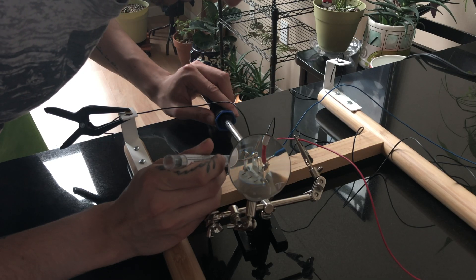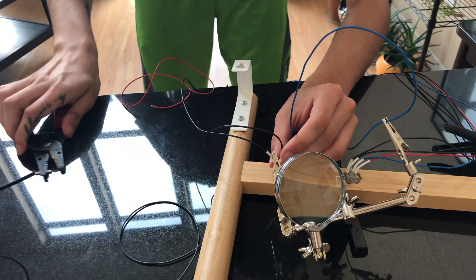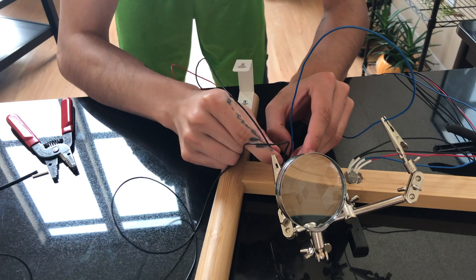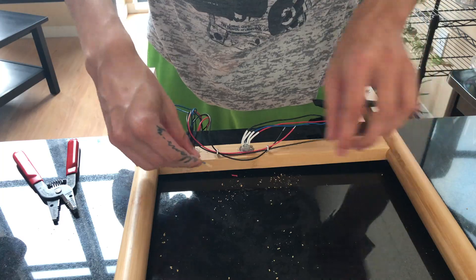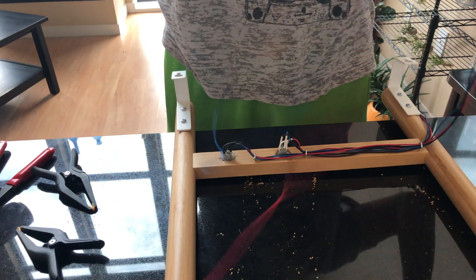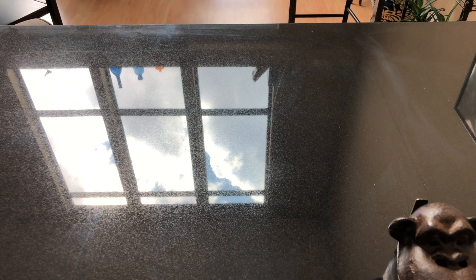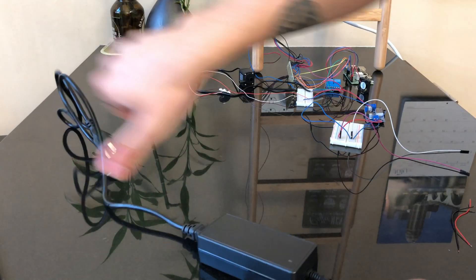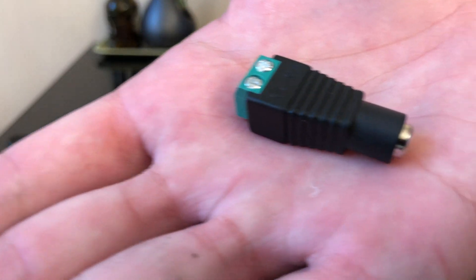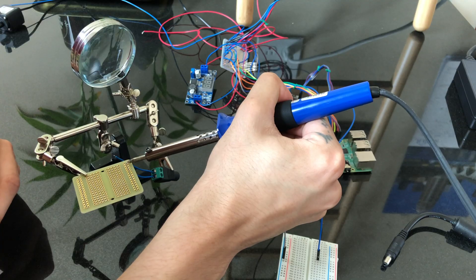Let's get this thing wired up. The brain of this thing will be a Raspberry Pi powered by a 5 volt 10 amp charger. I'll be using this small breadboard to create the circuit.